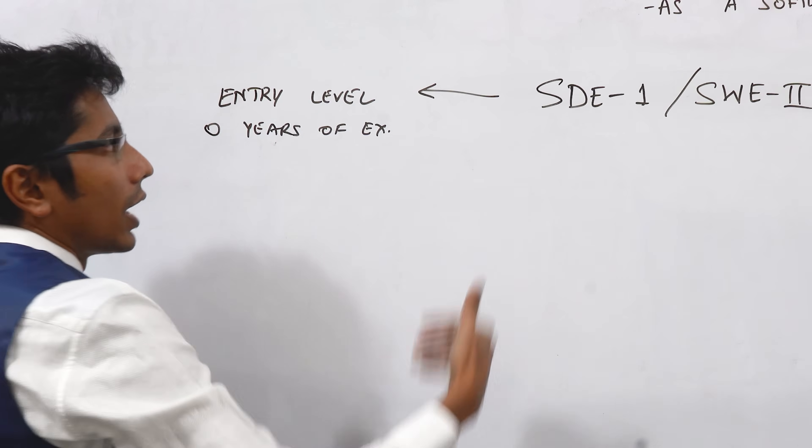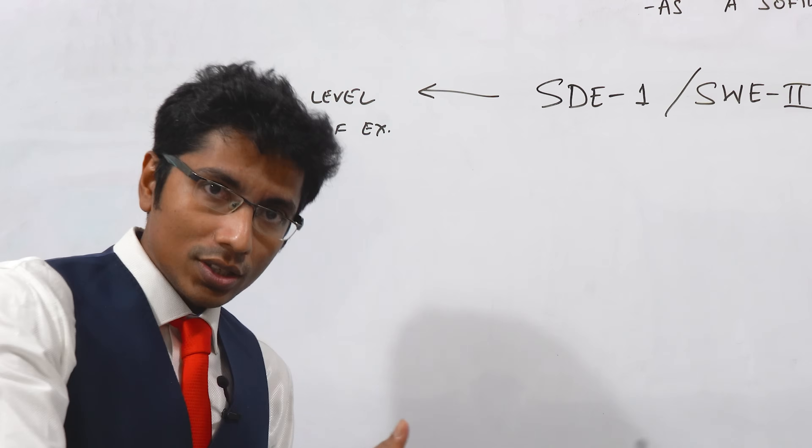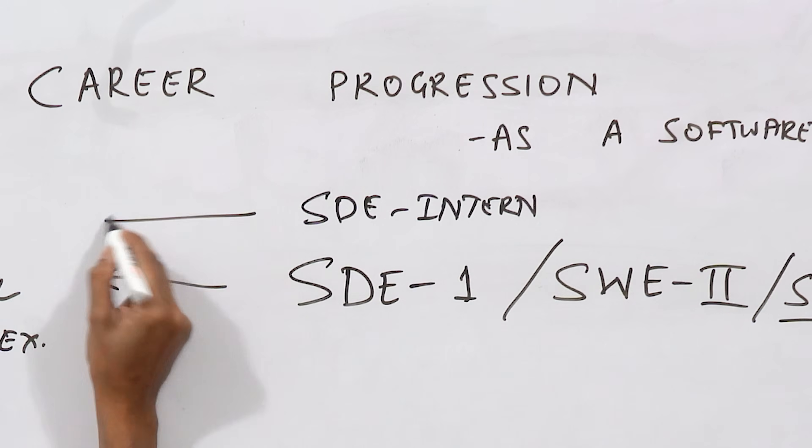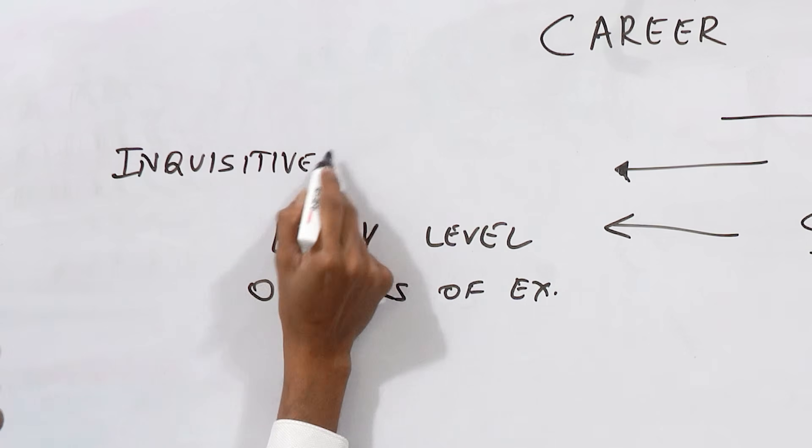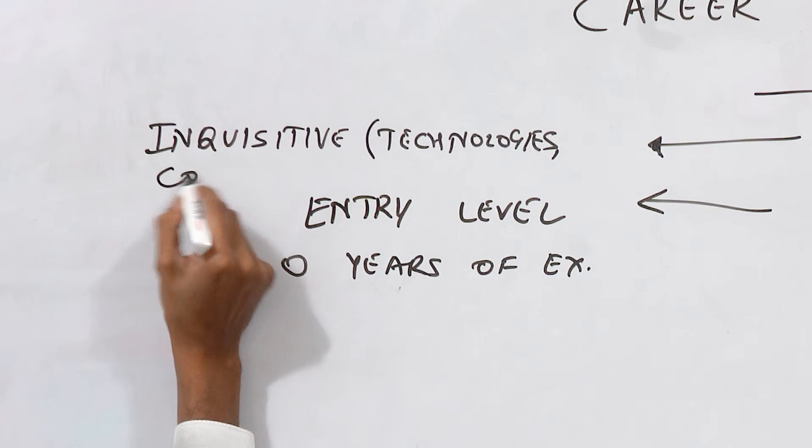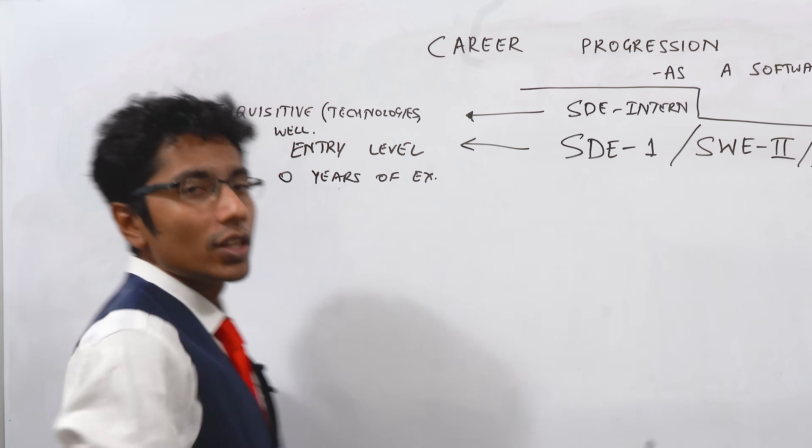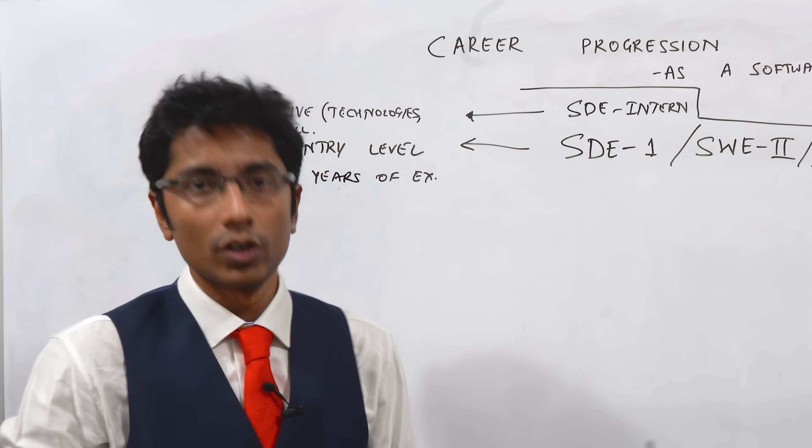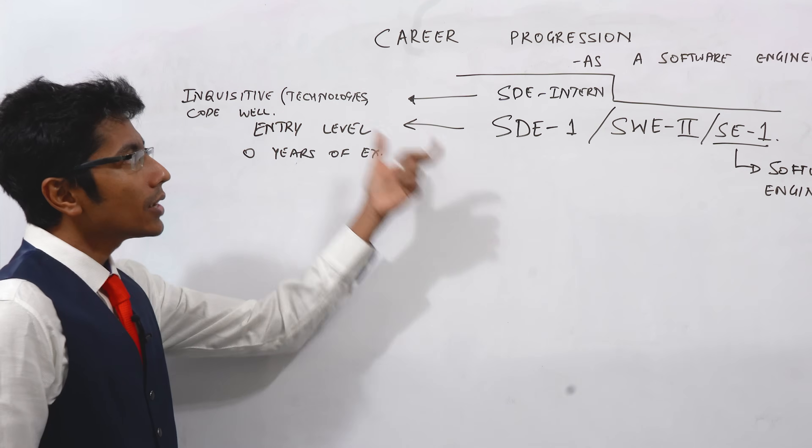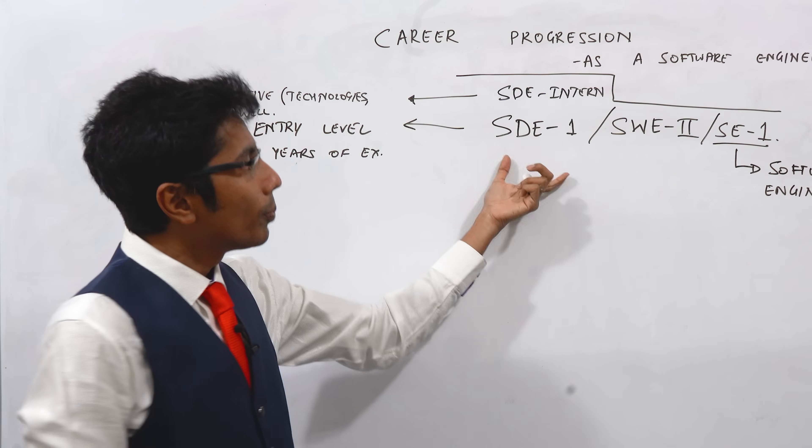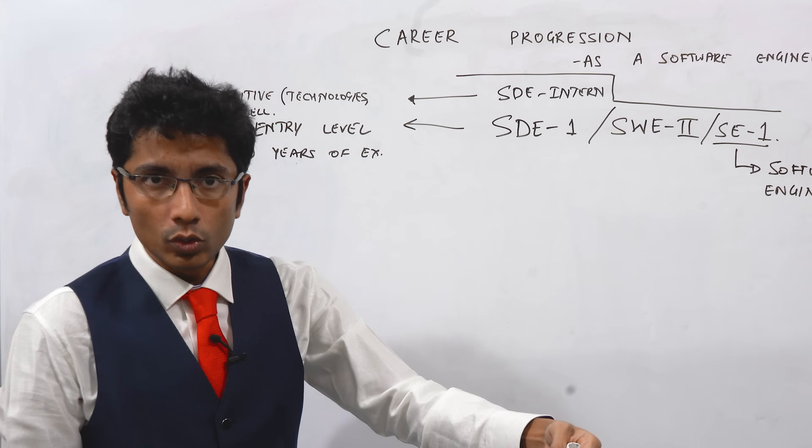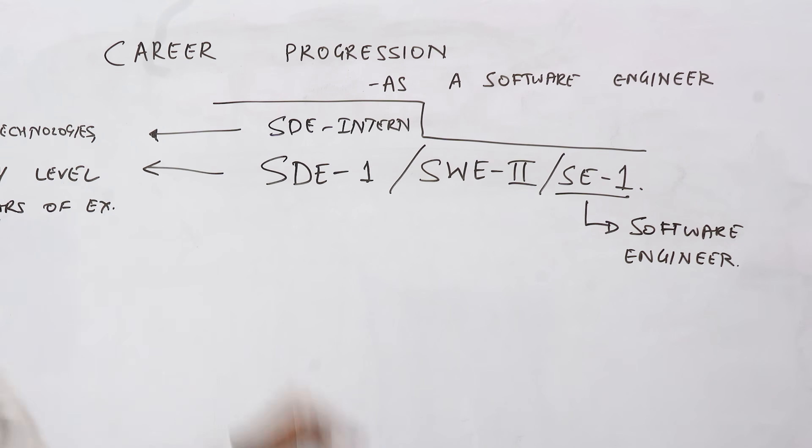You might also think of one level before this as an intern. What can you expect SDE intern? Be inquisitive around the technologies that they're working and by the end of their internship, they're expected to be able to code well at SD1 level so that they get the pre-placement offer. You're basically promoted from intern to SD1. And as you'll see, promotions depend on you performing at a level above you.